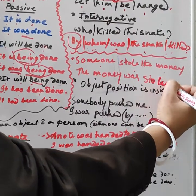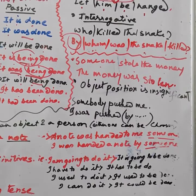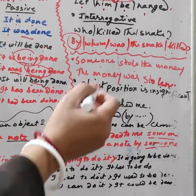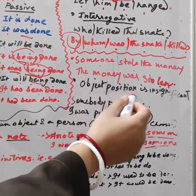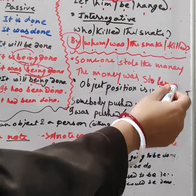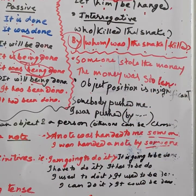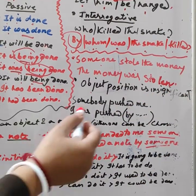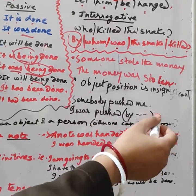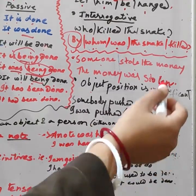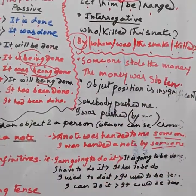Because you don't know who has stolen the money, the subject's position is not significant. Similarly, 'Somebody pushed me' becomes 'I was pushed' — by whom you don't know or don't want to mention.